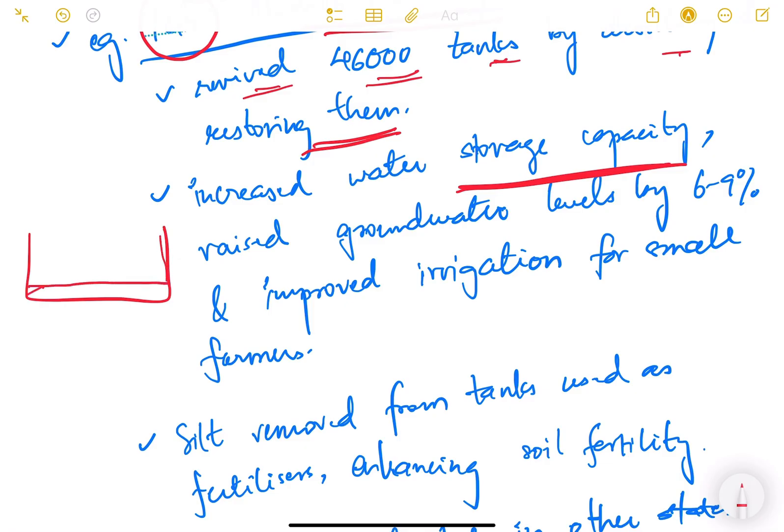Desilting means, for example, if this is the entire capacity and here the siltation has happened—the mud has accumulated—this much volume of tank has reduced. What they have done is removed this mud outside so that this much capacity is again available in the tank. This is called desilting. Storage capacity has increased; it has raised groundwater levels by 6 to 9 percent because now more water is stored and more percolation happens inside the ground, so groundwater recharge is also happening. It has improved irrigation for small farmers.